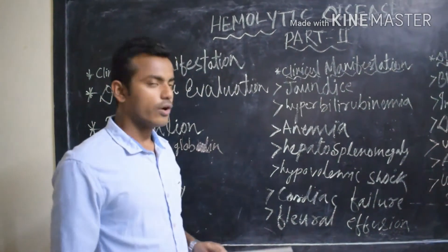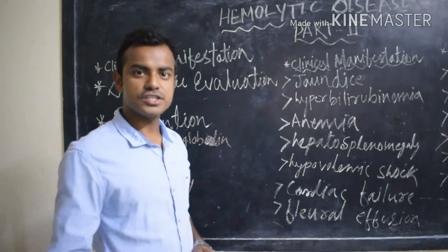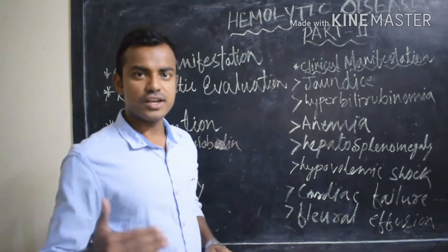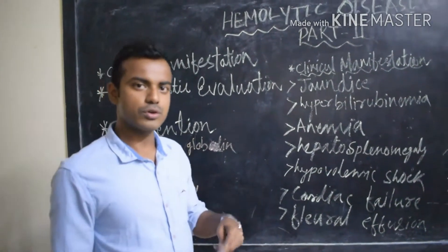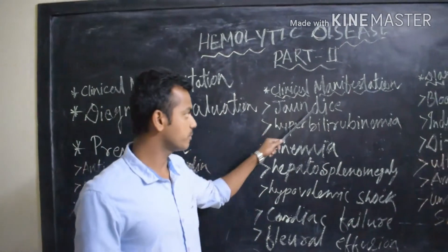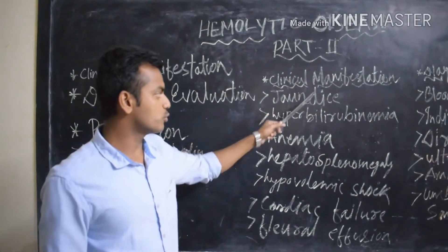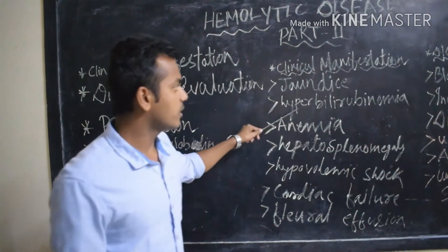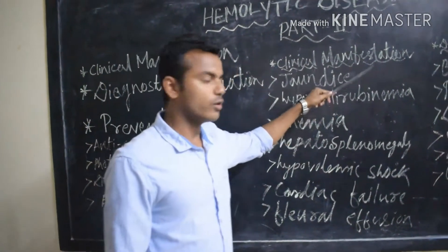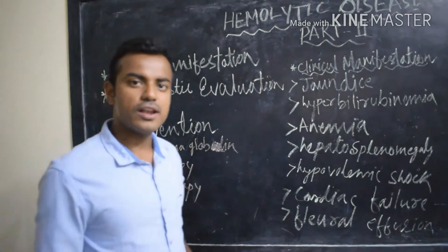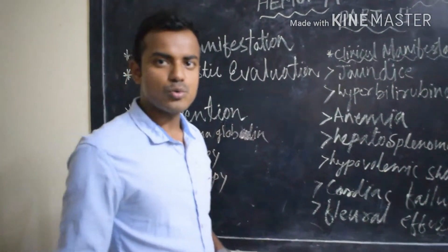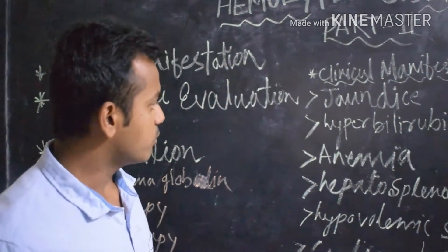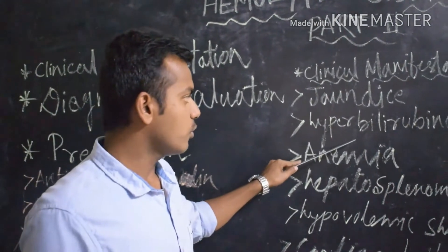Jaundice means when the baby is having yellowish discoloration of the skin, mucous membranes, body tissues, or the sclera of the eyes, then we say the baby is jaundiced. This jaundice occurs due to hyperbilirubinemia — an increased bilirubin level above normal. Normal bilirubin level is 0.2 to 1.2 mg per deciliter.